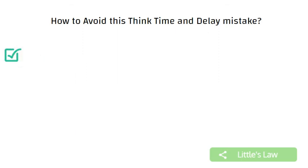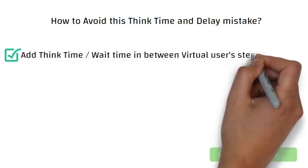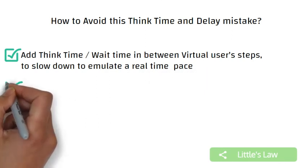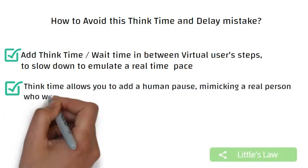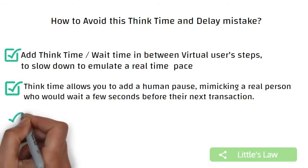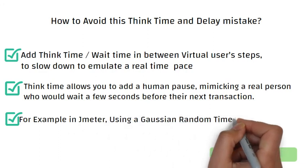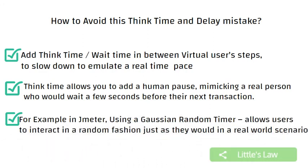So how can we avoid or address this mistake? Adding some sort of think or wait time in between the virtual user's steps will effectively slow the user down to a more realistic pace. Think time allows you to add a human pause, mimicking a real person who would wait a few seconds before further interacting with the site. For example, while using a tool like JMeter, add a Gaussian random timer which allows users to interact in a random fashion, just as they would in a real-world scenario.